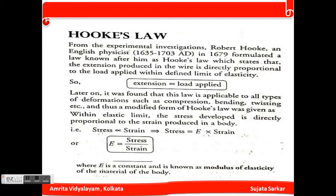From experimental investigation, Robert Hooke, an English physicist, in 1679 formulated a law called Hooke's Law. The law states that the extension produced in the wire is directly proportional to the load applied, within the definite limit of elasticity. So extension is proportional to load applied.